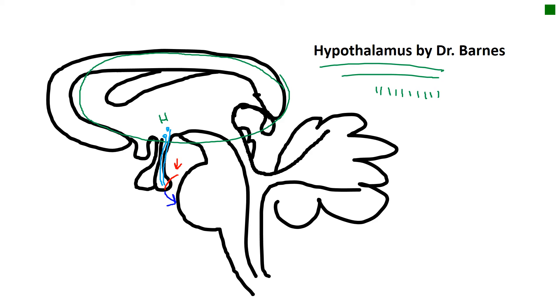Interestingly enough, the front part of the pituitary is not directly connected to the brain. Instead, it's connected through a superior hypophyseal artery, which forms a little plexus network. And then there are hypophyseal portal veins that connect this network to a lower secondary capillary plexus in the anterior pituitary.